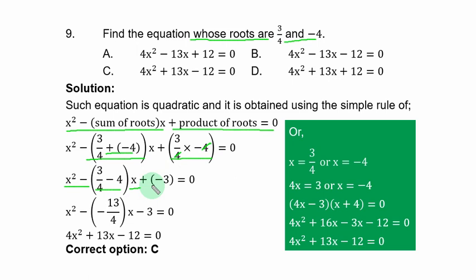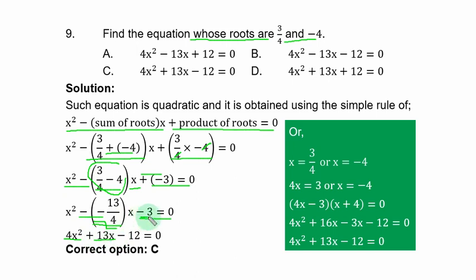Substituting: x² − (−13/4)x + (−3) = 0, which gives x² + 13/4·x − 3 = 0. Multiply through by 4 to clear fractions: 4x² + 13x − 12 = 0. The correct option is C.